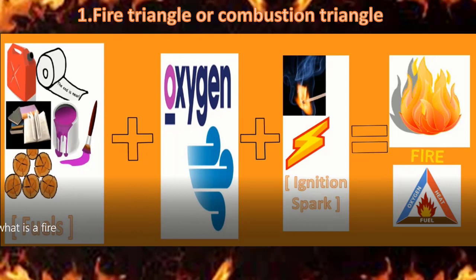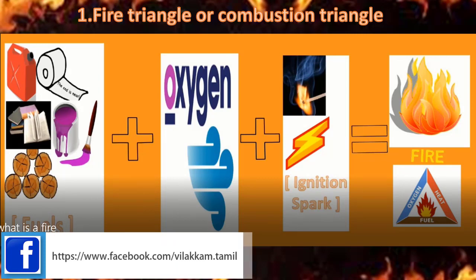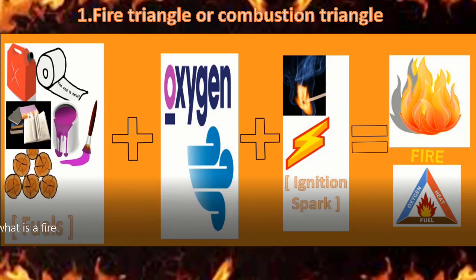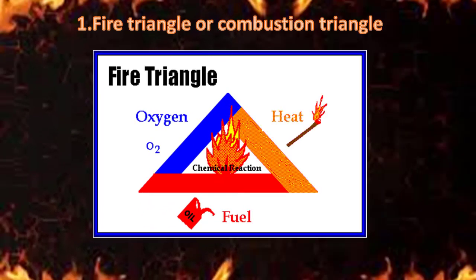The first topic is fire triangle. First, we should know what is fire. Normally, a fire contains the element fuel — anything like paper, wood, paints, gasoline, etc. — plus the element oxygen, which is present everywhere as atmospheric air, plus a third element, a spark for an ignition source. A fire needs to ignite heat, fuel, and an oxidizing agent, usually oxygen.